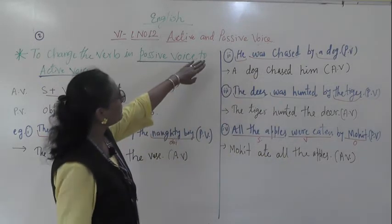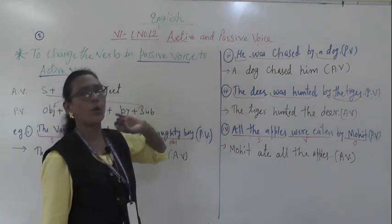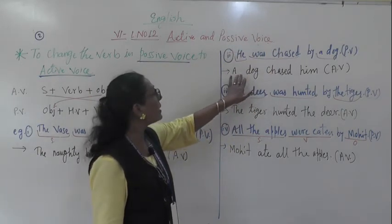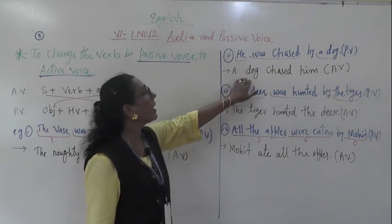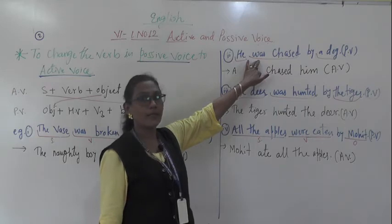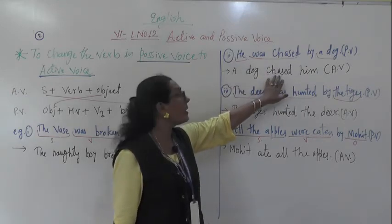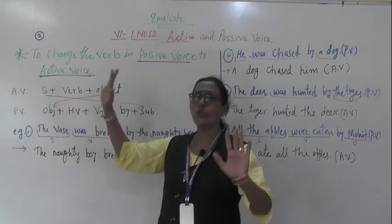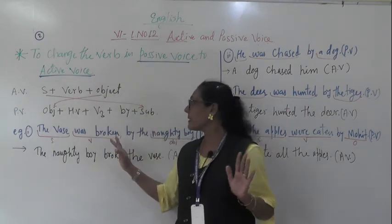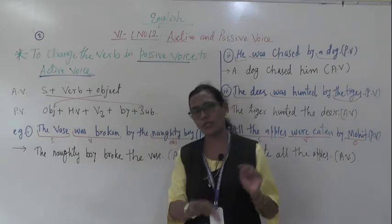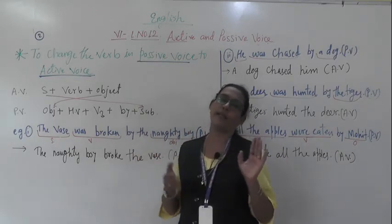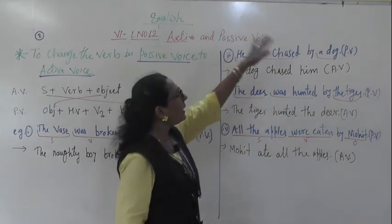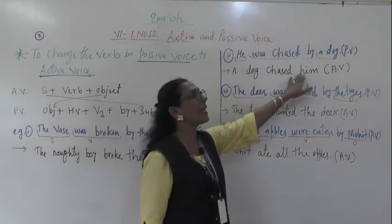Second example: 'He was chased by a dog.' Again find subject, verb, object. Subject from 'by' phrase = 'a dog.' 'Was' = past tense, so verb = 'chased' (V2). Object = 'he' changes to 'him.' Active voice: 'A dog chased him.' Simple — just write subject, verb, object.